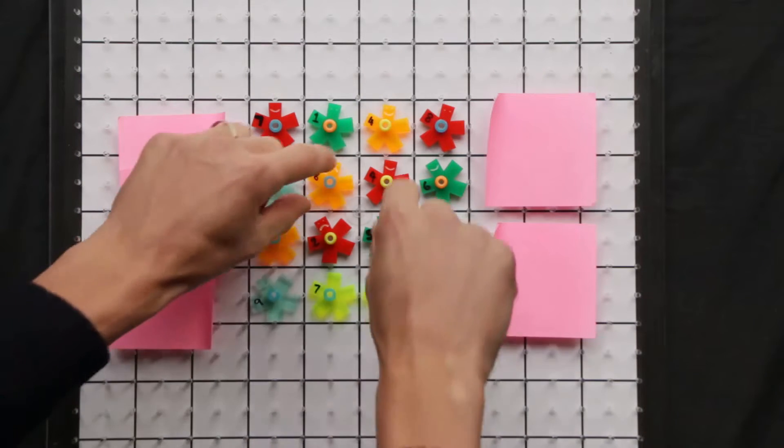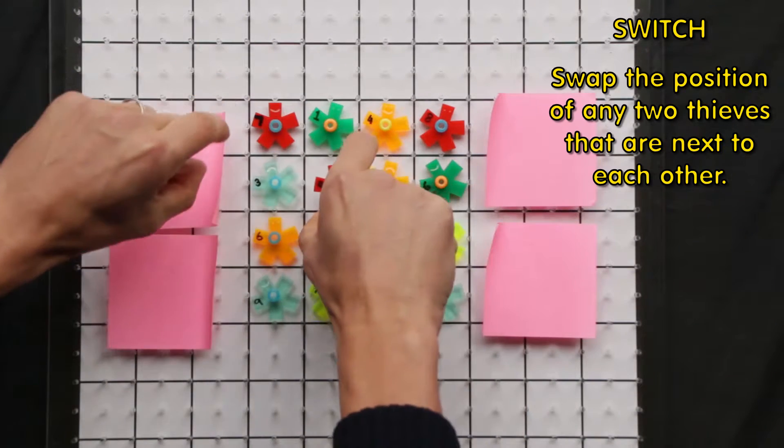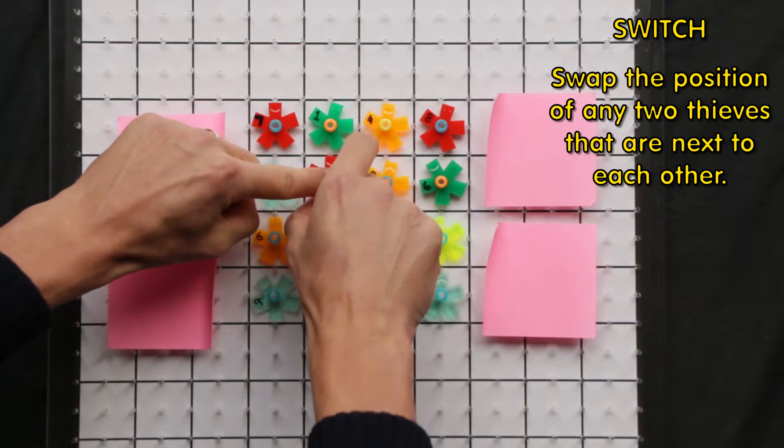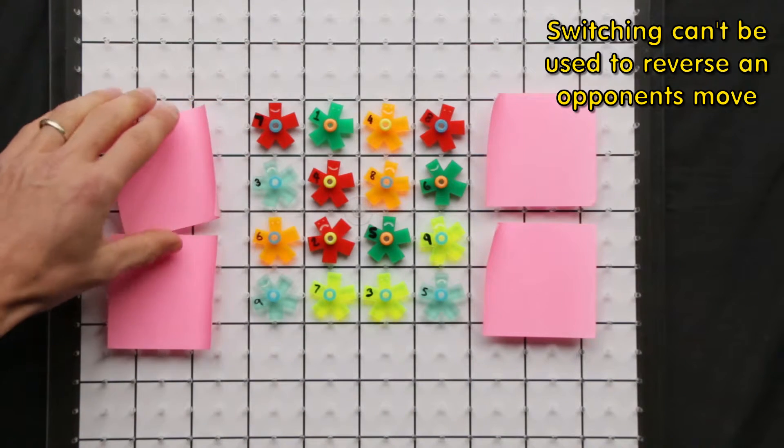Switching and stealing are the two other options that you can take. So I'm going to start by switching these two players. Remember, you can switch any two players. It doesn't have to be yourself and they need to be next to each other. So that's my turn. I've switched. Tim's turn now.